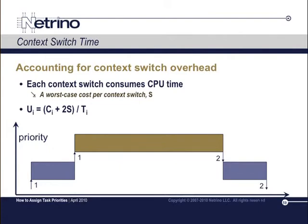That turtles-on-turtles explanation holds all the way down to the lowest-priority task. The lowest-priority task requires a context switch from the idle task, then runs to completion, with one more context switch on the way out. So we modify our utilization formula slightly, and with this, we've eliminated context switching as an issue.